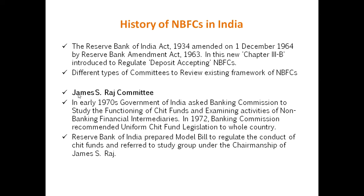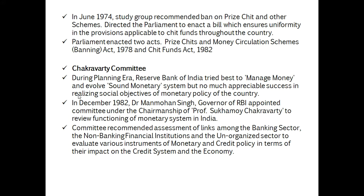In 1972, the Banking Commission recommended uniform chit fund legislation for the whole country and the Reserve Bank of India prepared a model bill to regulate the conduct of chit funds. This was referred to a study group under the chairmanship of James S. Raj. In June 1974, the study group recommended a ban on prize chits and other schemes, directing Parliament to enact a bill ensuring uniformity in provisions applicable to chit funds. Parliament enacted two acts: the Prize Chits and Money Circulation Schemes (Banning) Act 1978 and the Chit Funds Act 1982.